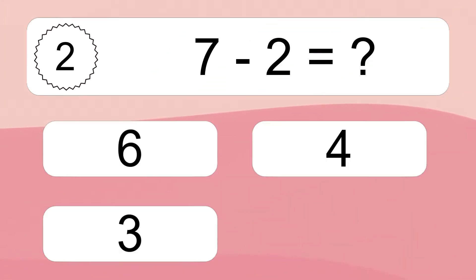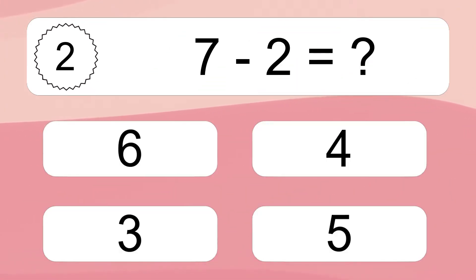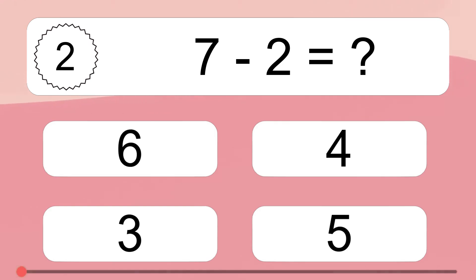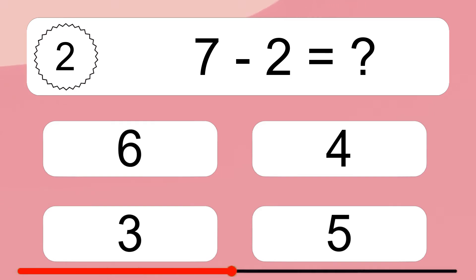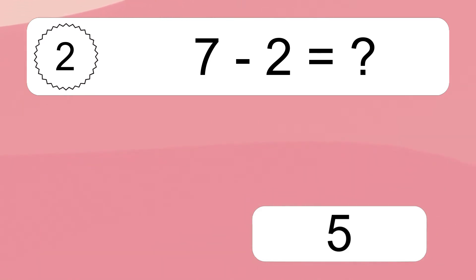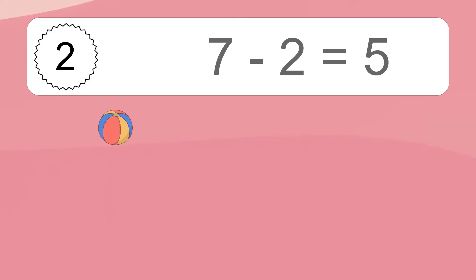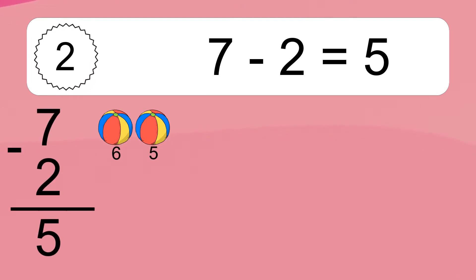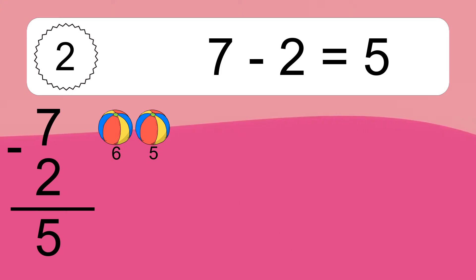7 minus 2 equals what? 7 minus 2 equals 5. Let's count it: 6, 5.